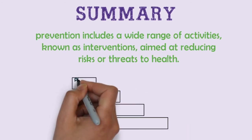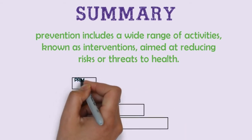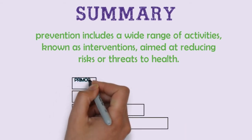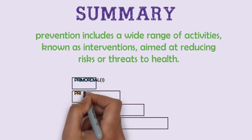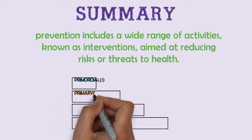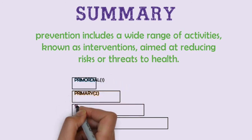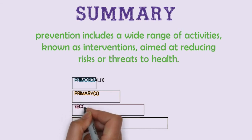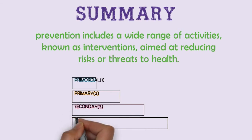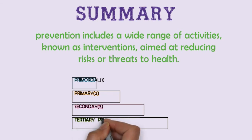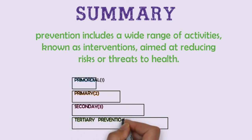Primordial prevention eliminates the existence of risk factors for disease occurrence, while primary prevention activities aim to actually stop disease from happening when the risk exists. However, secondary prevention activities stop the illness from getting worse. Meanwhile, tertiary prevention manages disability and limits death from the illness.